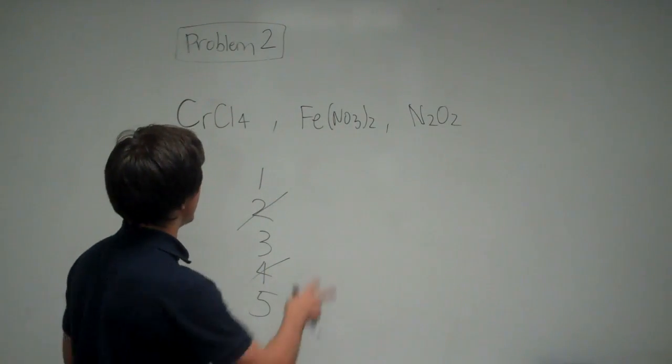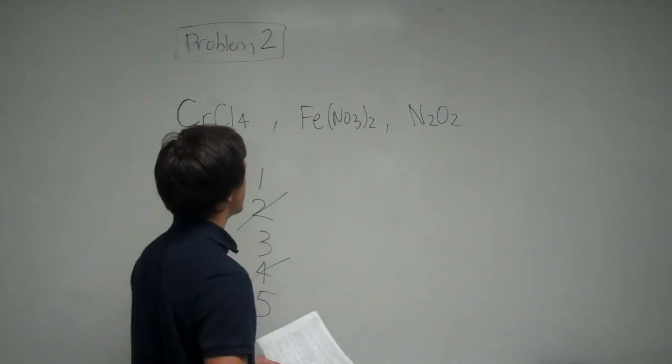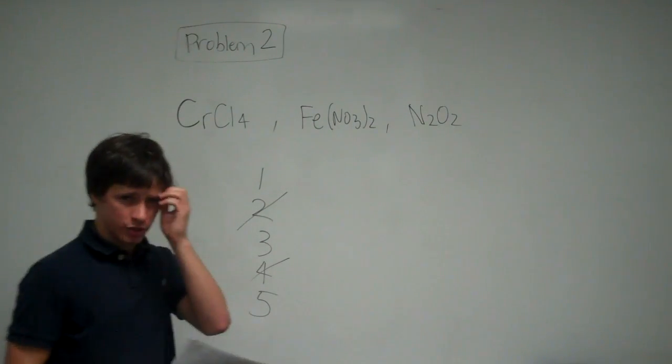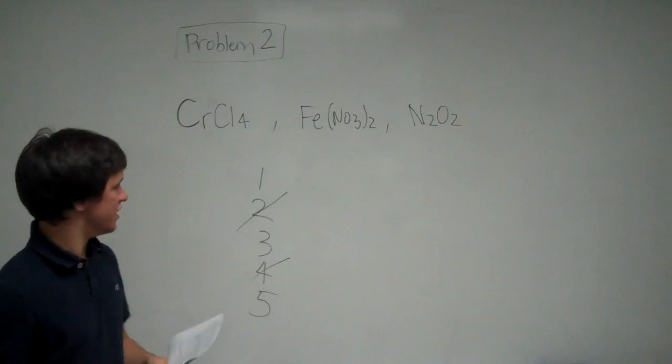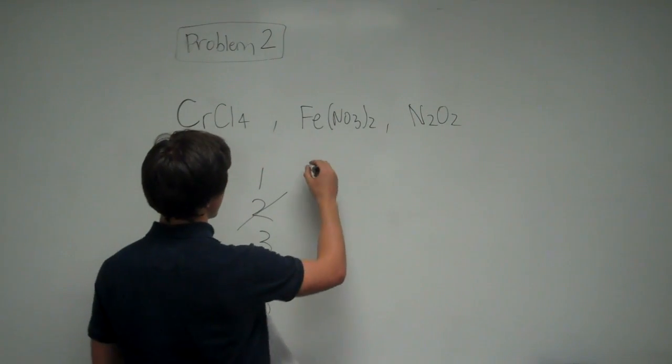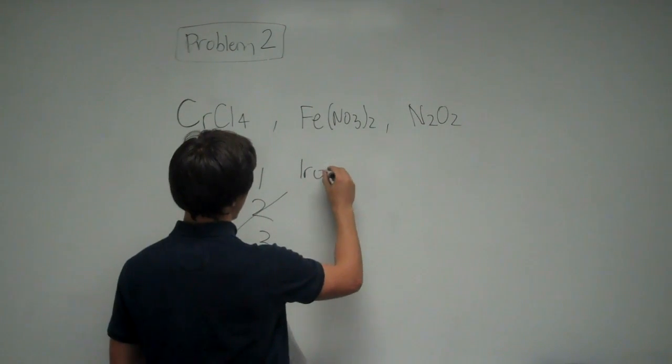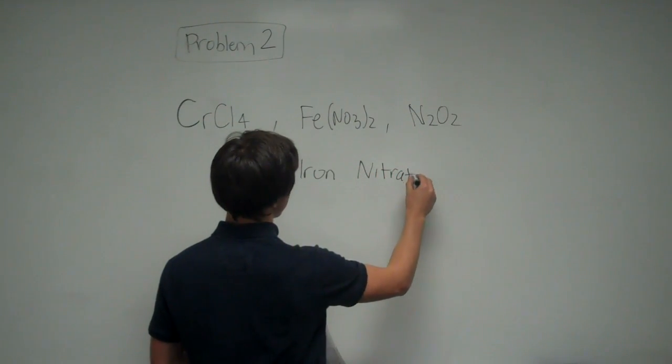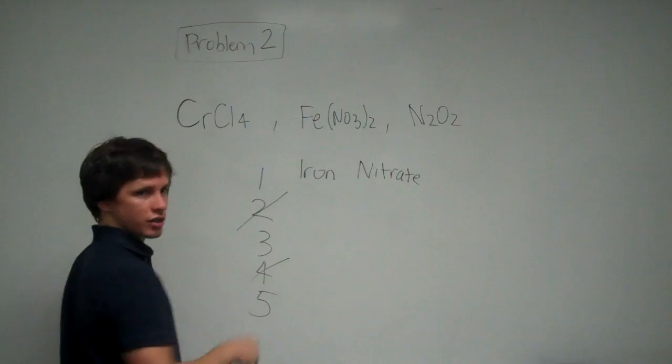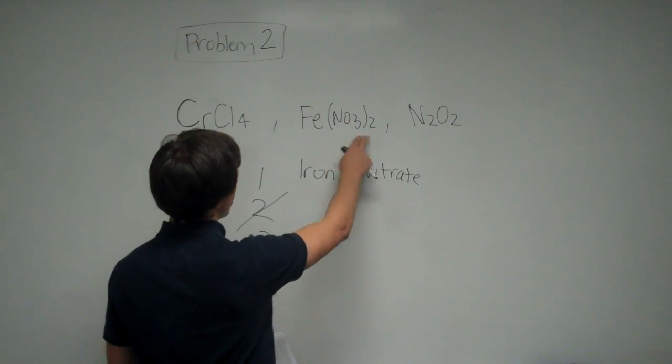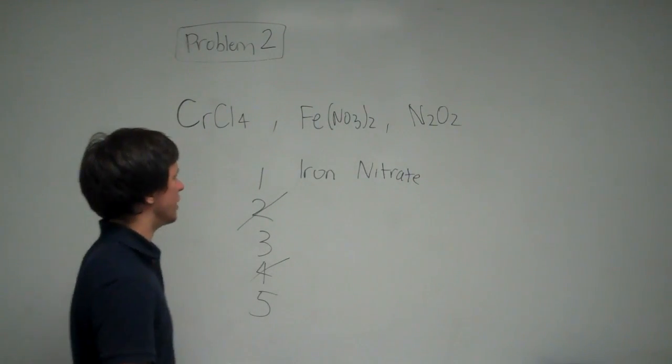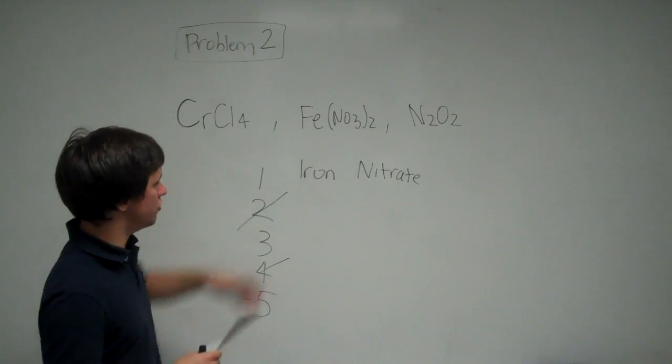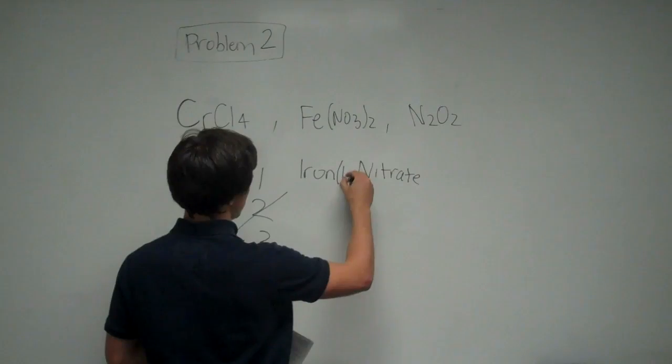If we look at this second compound, this atomic group NO3 is called nitrate, and it has a charge of negative one. So we know this is going to be some kind of iron nitrate. Since nitrate has a charge of negative one and there's two of them, that must mean that this iron is iron (II). So this is iron (II) nitrate.